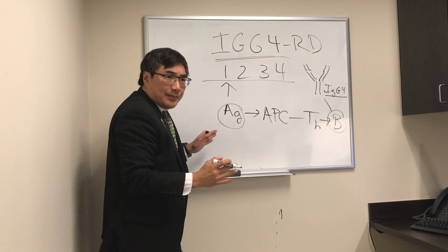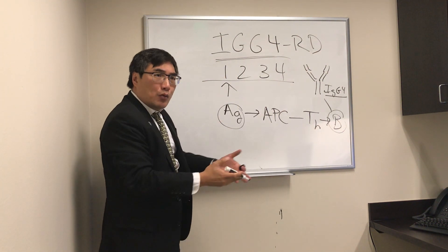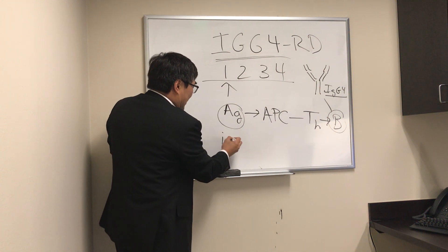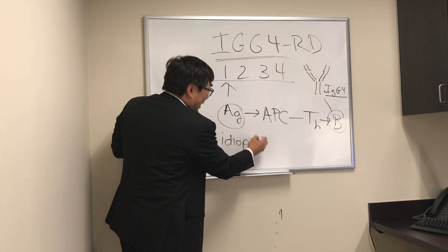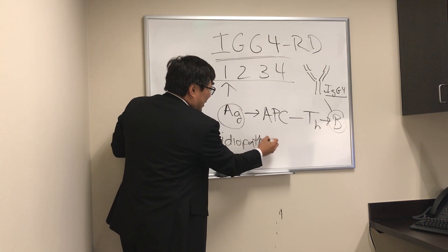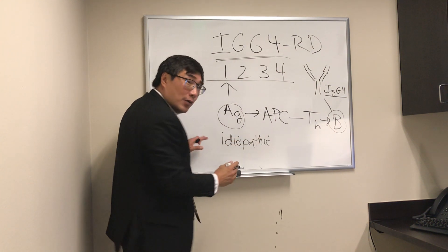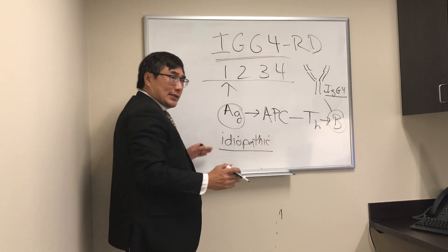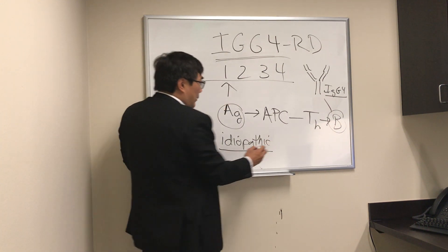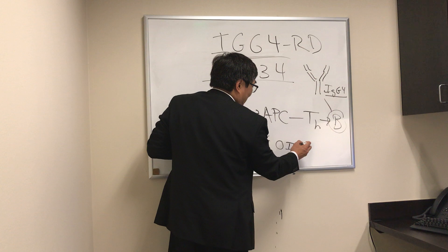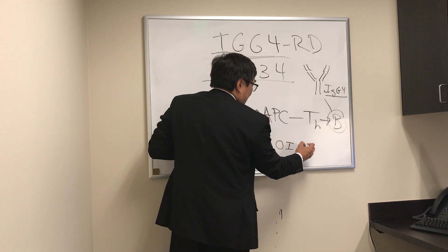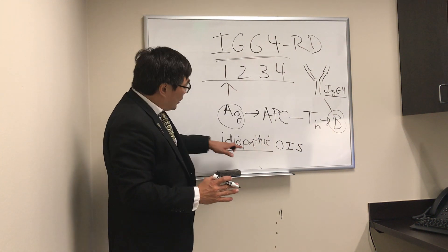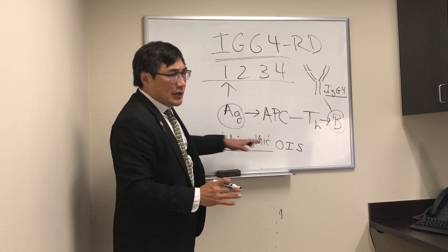The reason this is important to us clinically is IgG4-related disease. A lot of diseases that we called idiopathic in the past are now turning out to be IgG4-related. For neurophthalmology, that includes idiopathic orbital inflammatory syndrome, also known as orbital inflammatory pseudotumor.